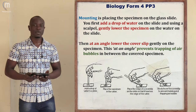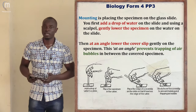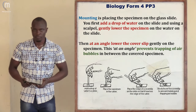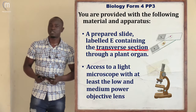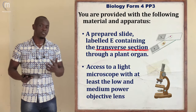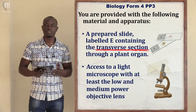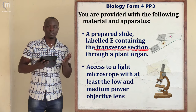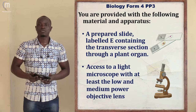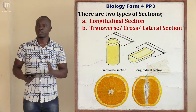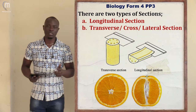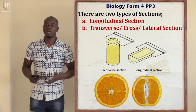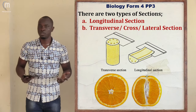Those are the four methods of preparing a temporary slide. Don't forget the two different types of slides: permanent and temporary. The other part of the question tells us about different sections. This question was saying that the specimen was cut using a transverse section. We have two different types of sections: the first is a transverse section, and the other is a longitudinal section.